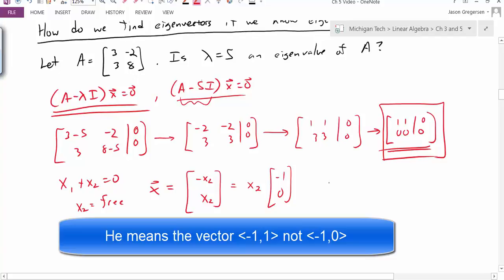So I can see any multiple of [-1, 1] is an eigenvector for lambda equals 5. And so I'll write them as an eigenpair. I say when lambda equals 5, when that's my eigenvalue, the associated eigenvector is [-1, 1].